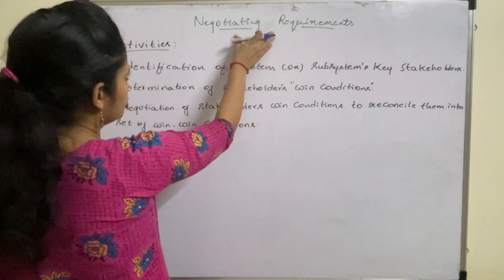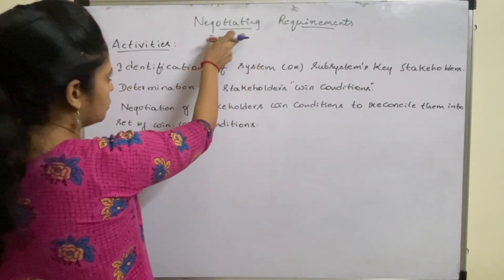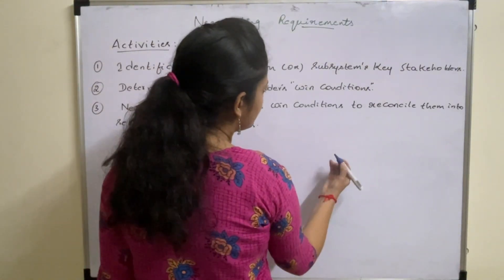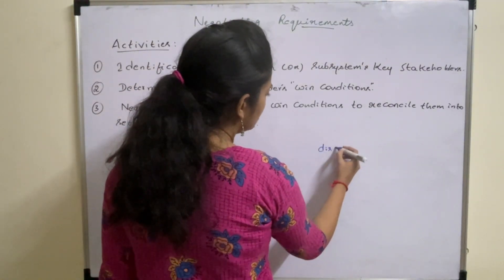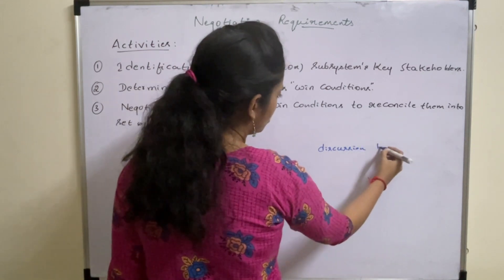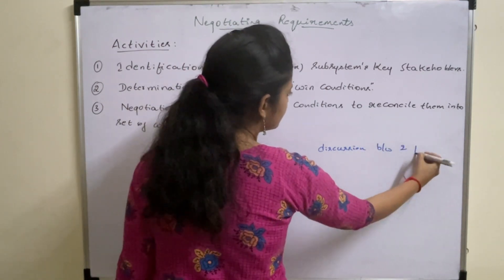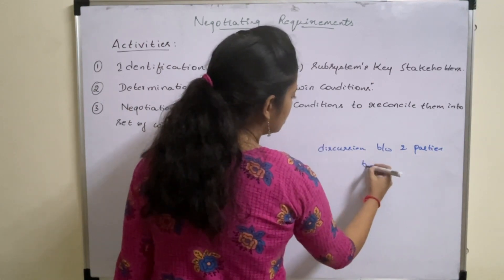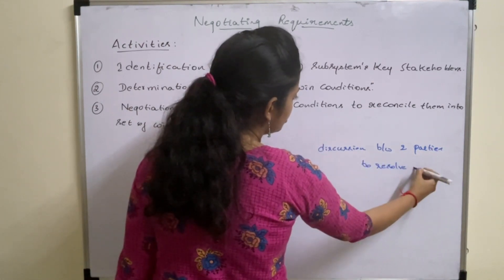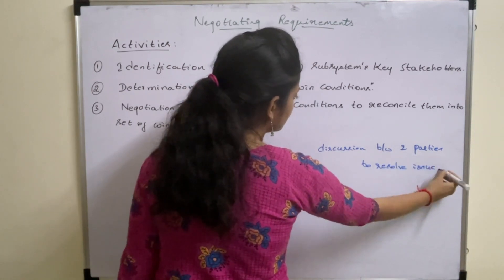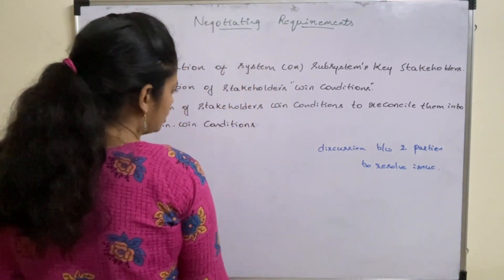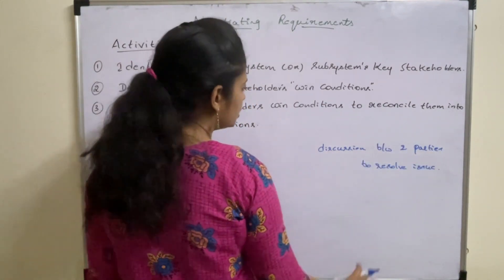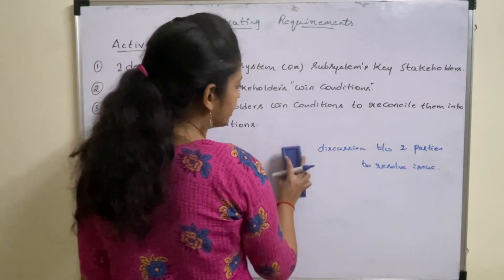Let us discuss about negotiating requirements. First of all, what is meant by negotiation? Negotiation is nothing but a discussion between two parties or two groups in order to resolve an issue or to reach an agreement. These two parties or two teams discuss with each other in order to reach a particular agreement.